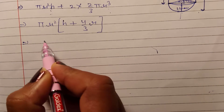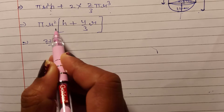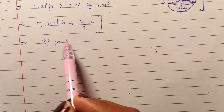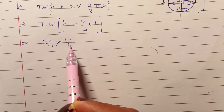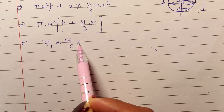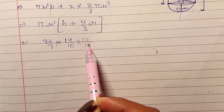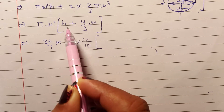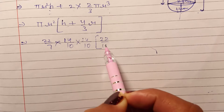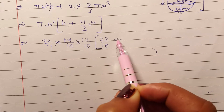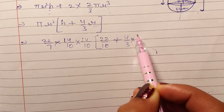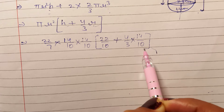π की value 22/7 put करेंगे। Radius = 1.4 cm = 14/10। r² तो दो बार आएगा: (14/10)²। Bracket के अंदर height = 2.2 cm = 22/10। Plus 4/3 × radius = 4/3 × 14/10।